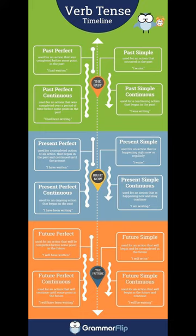The future tenses. Future perfect, used for an action that will be completed before some point in the future — for example, 'I will have written a book.' Future simple, used for an action that will begin and be completed in the future — for example, 'I will write a book.'